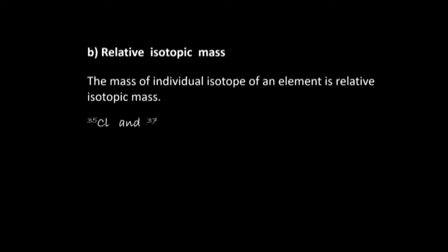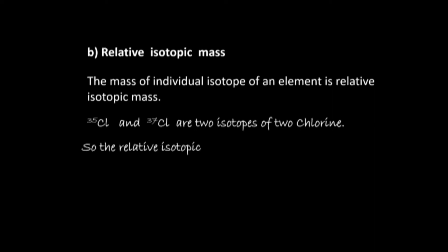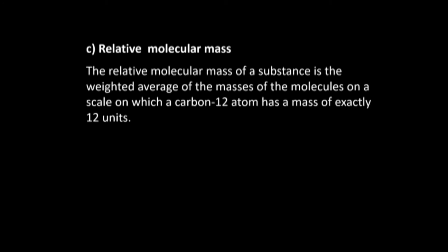Relative isotopic mass: the mass of an individual isotope of an element is its relative isotopic mass. Chlorine-35 and chlorine-37 are two isotopes of chlorine, so the relative isotopic masses of chlorine are 35 and 37.